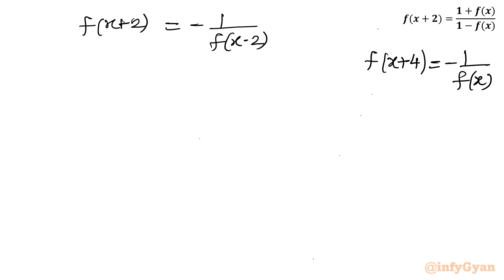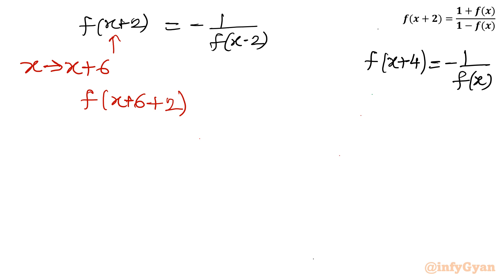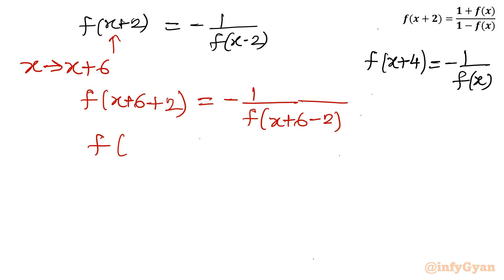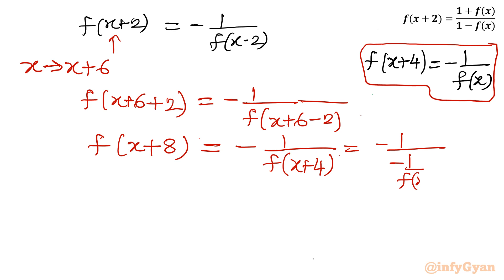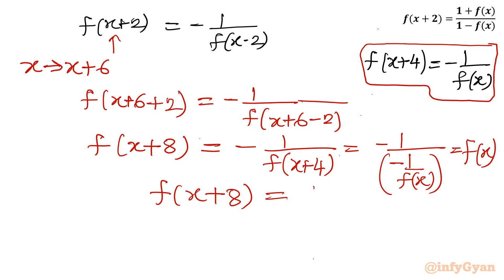Second substitution: replace x with x + 6 in f(x+2) = −1/f(x−2). So f(x+6+2) = −1 / f(x+6−2), giving f(x+8) = −1 / f(x+4). We already know f(x+4) = −1 / f(x), so substituting: f(x+8) = −1 / (−1/f(x)) = f(x).